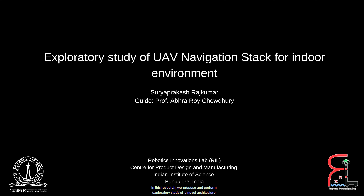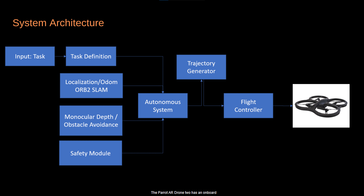In this research we propose and perform an exploratory study of a novel architecture for monocular camera-based indoor navigation stack for a UAV. The Parrot Drone 2.0 has an onboard 1.2 megapixel camera. The user defines a task which the drone needs to perform autonomously.